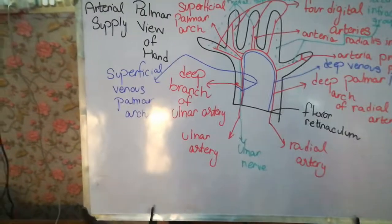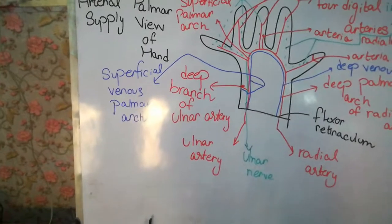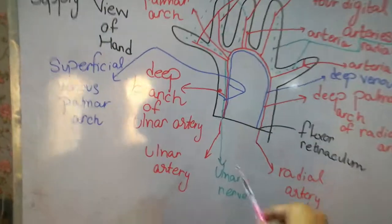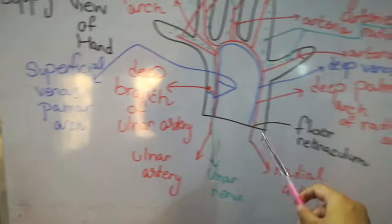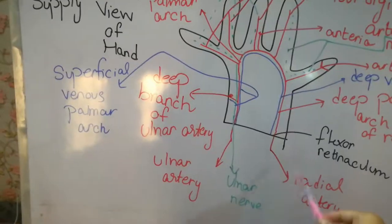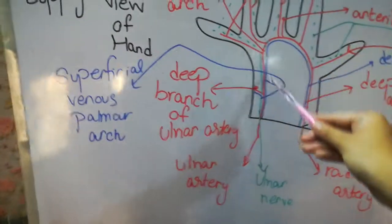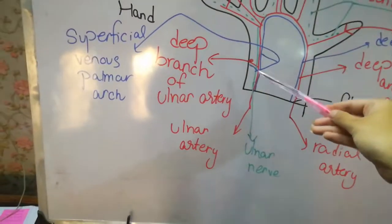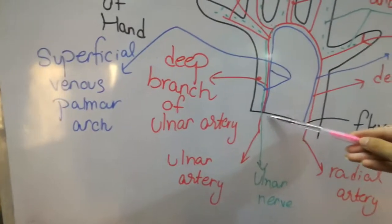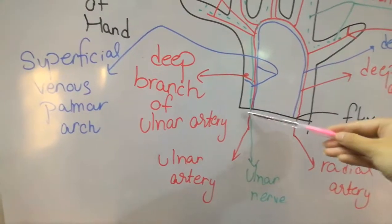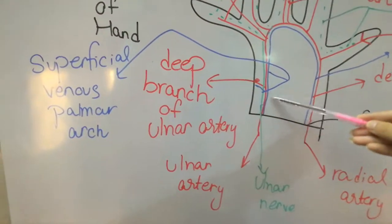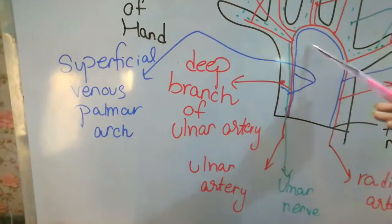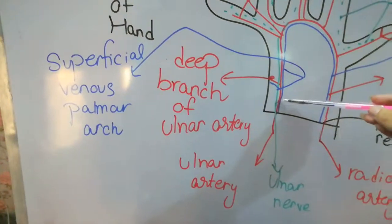The palm is supplied by two types of arteries: the ulnar artery and the radial artery. The ulnar artery is present on the lateral side, while the radial artery is on the middle side. The ulnar artery passes anterior to the flexor retinaculum and then enters the palm, dividing into two branches — a deeper branch and a superficial branch.